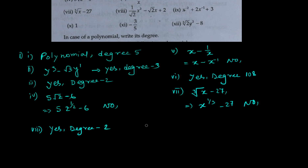The ninth one is x to the power minus 2 plus 2 times x to the power minus 1 plus 3. Obviously it has negative powers, so it's not a polynomial.